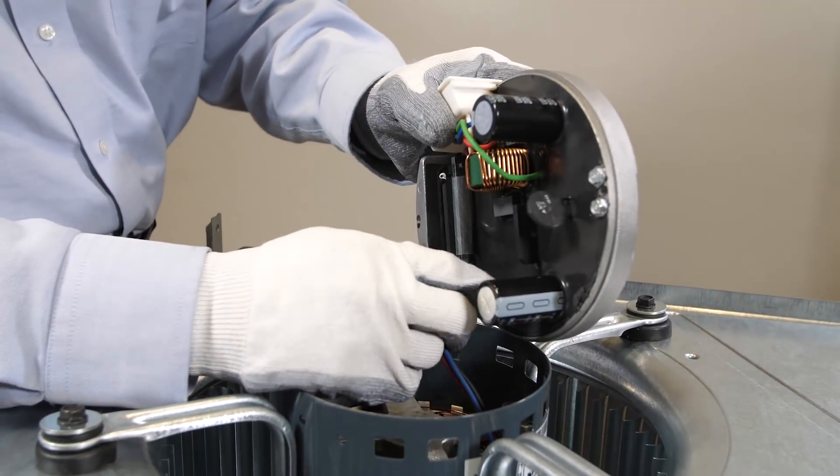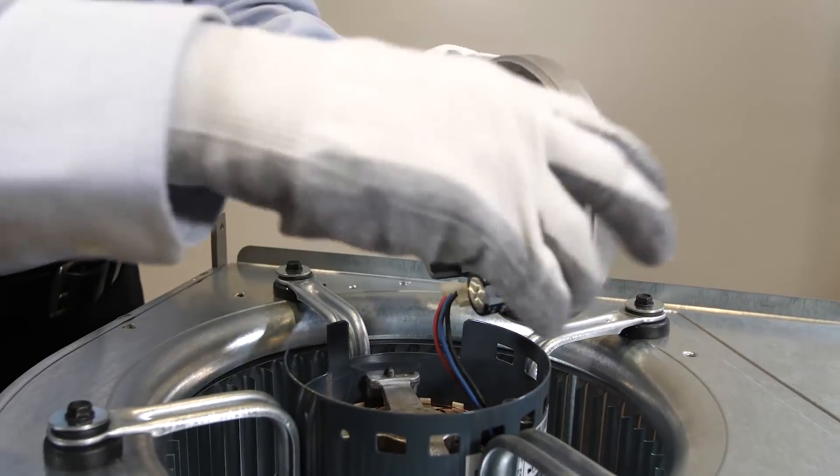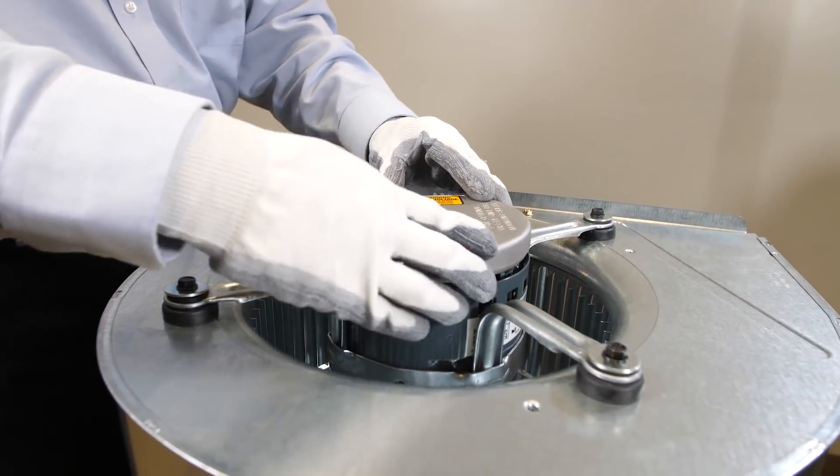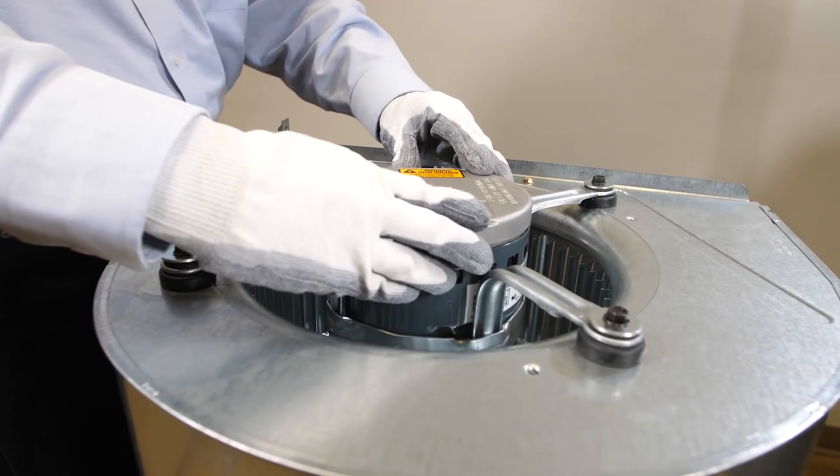Once you have the proper replacement module, connect the three wire plug. Make sure the connector is fully seated and latched and align the power connector and aluminum heatsink with the notches on the motor housing.